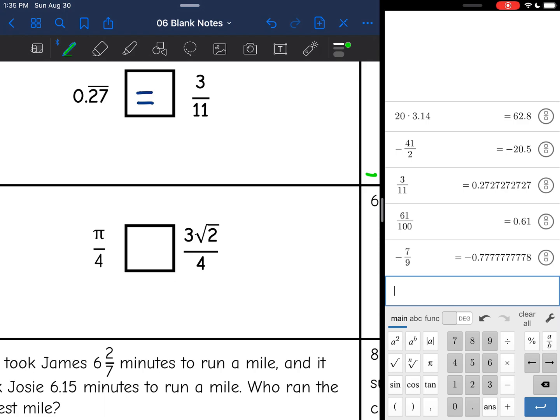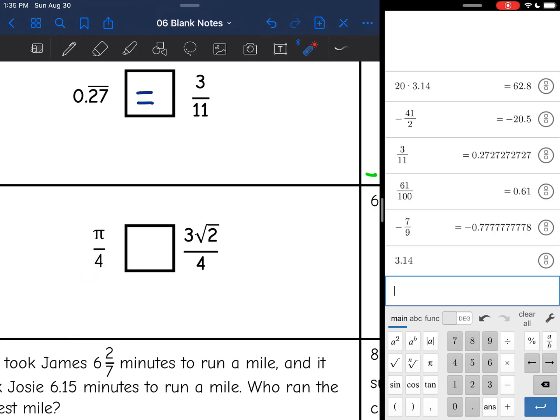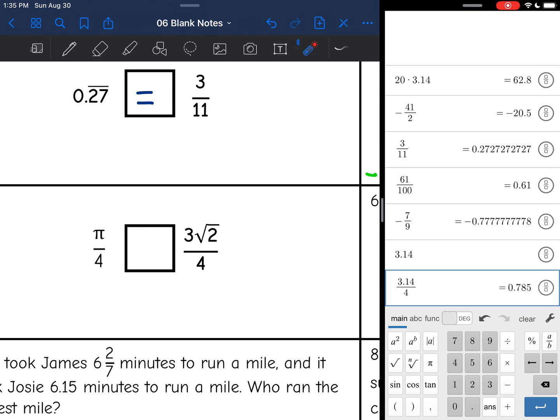We have some fractions over here. You need to be careful how you type them into the calculator, especially this one right here. So let's start with pi divided by 4. It will be 3.14 divided by 4, and that's 0.785.